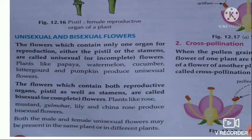On the basis of the presence of male and female reproductive organs in a flower, flowers can be divided into two groups: unisexual and bisexual flowers. Unisexual flowers contain only one reproductive organ.